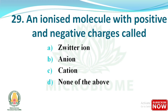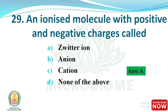Question: An ionized molecule with both positive and negative charges is called? The right answer is option A - zwitterion.